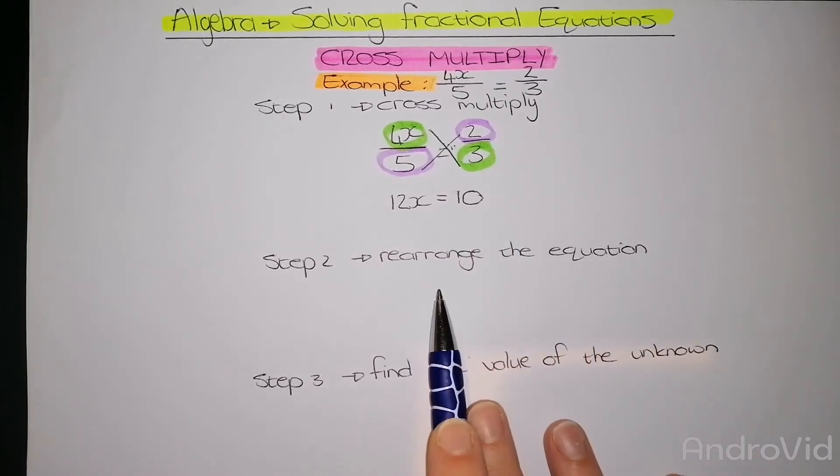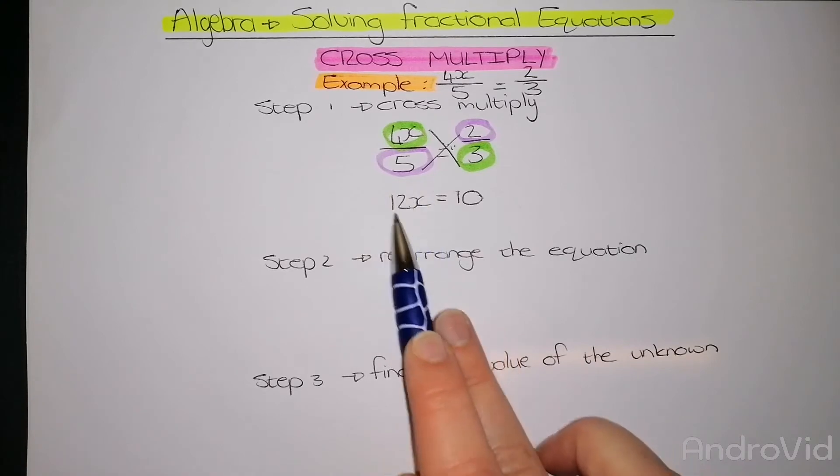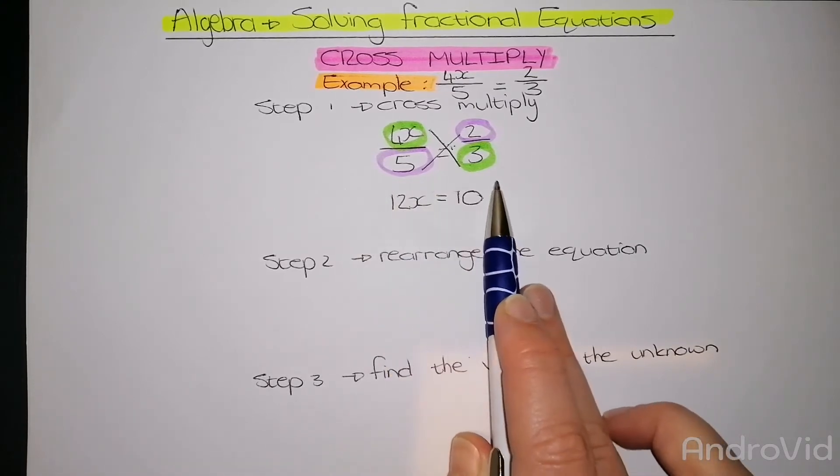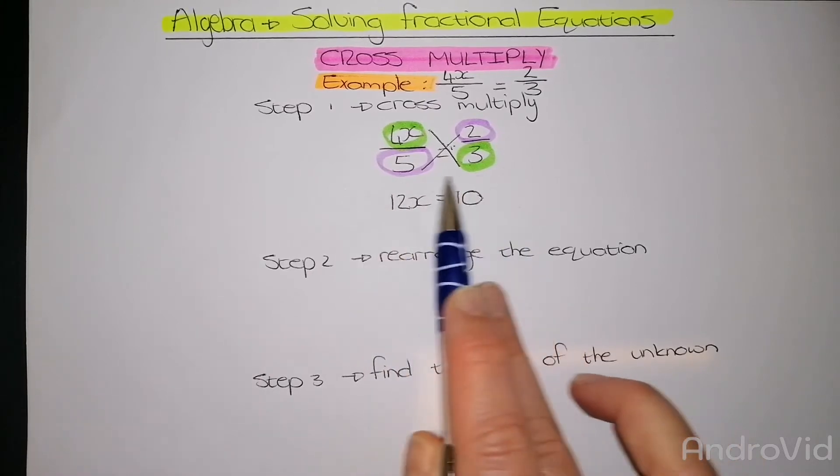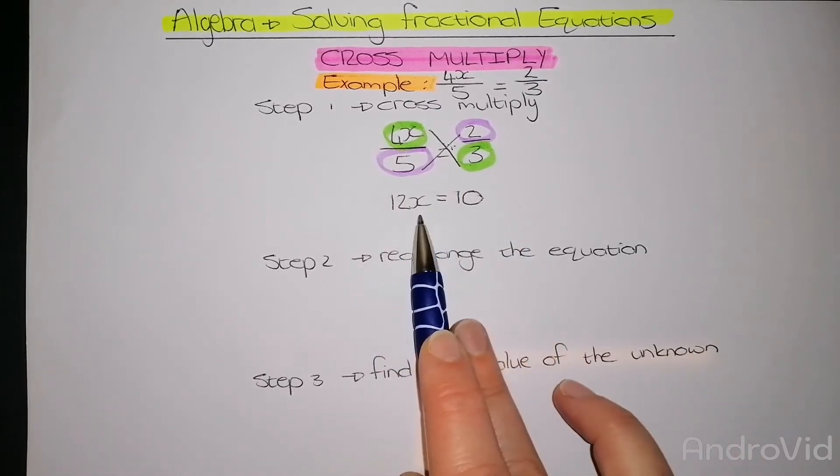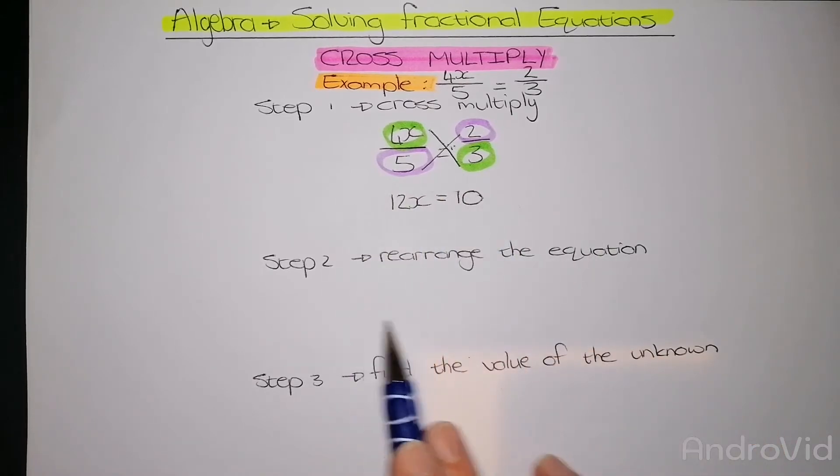Then we go to step number 2, rearranging the equation. With rearranging, we need to be sure that all unknowns are on the left-hand side and all numbers are on the right-hand side. Now this one is already rearranged because I've got my unknowns here and my numbers here. So in this case, I don't need to do step number 2.